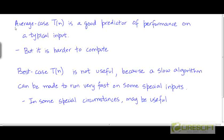The average case running time of an algorithm is a good predictor of the performance on a typical input. So if you know what the average case running time is, you can expect a typical run of the algorithm to take that long. But the problem is that it is mathematically a lot more tedious to compute the average case performance. That's the reason why in this course we are going to look at the average case performance of only some simple algorithms, and focus primarily on the worst case performance, assuming that what's important for us are those guarantees which come along with the worst case running times.